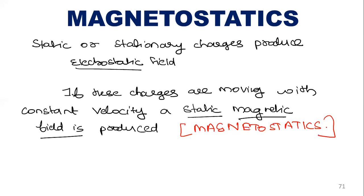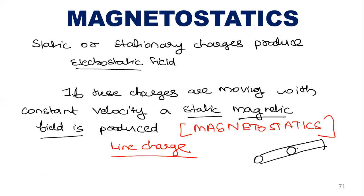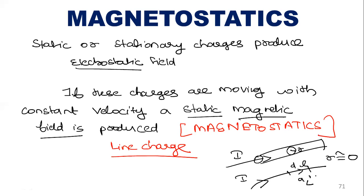Just like for electrostatic fields we studied line charge, surface charge, and volume charge, here also we will study line charge density, surface charge density, and volume charge density. For line charge, we consider a wire of negligible radius — radius approximately equal to zero. We consider a small length dL along direction aL, and we write I dL = I dL · aL. This is also called a filamentary conductor.